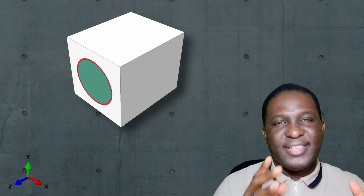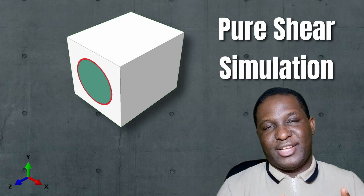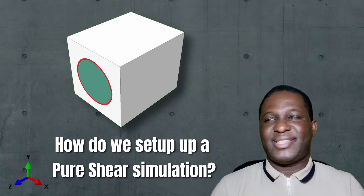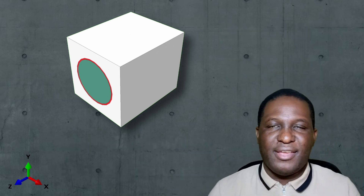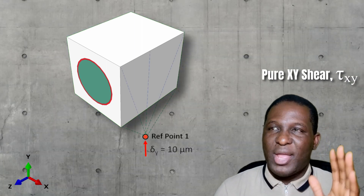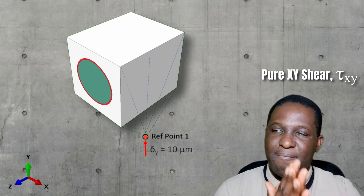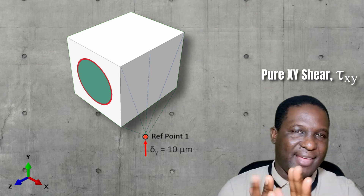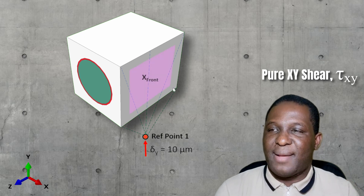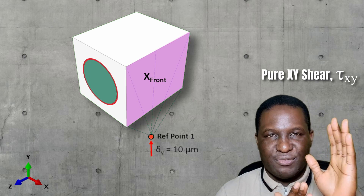In terms of the shear, it's very interesting, especially because I'm trying to do a pure shear simulation. How do we set up a pure shear? This is the RVE that we're working with. For the pure shear, there will be a loading in the XY plane. So first I'll identify the plane whose outward normal is pointing in the X direction, which is the X front, and I'm going to apply a Y loading on that X front.